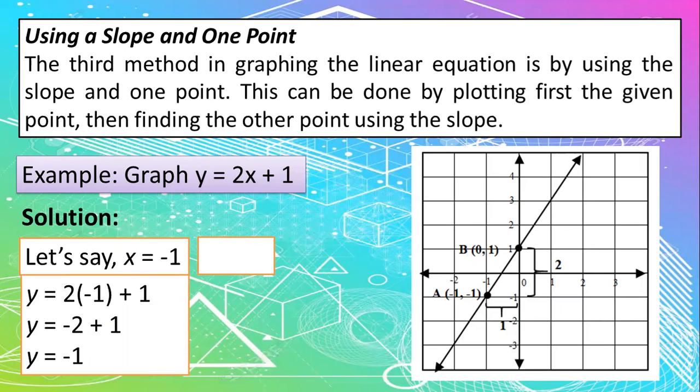So meaning to say, if the value of x is equal to negative 1, then the value of y is also negative 1. Which you can see here on our plane. They are located in quadrant 3. This is it. Okay?